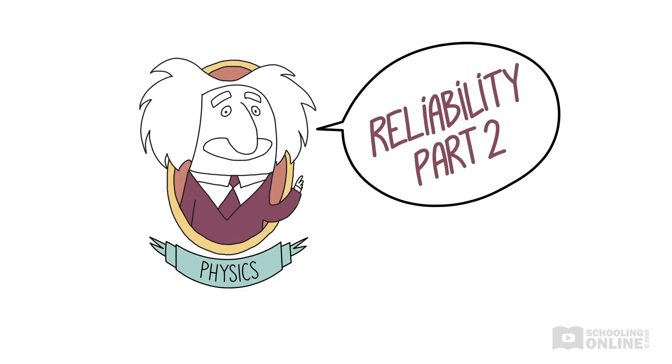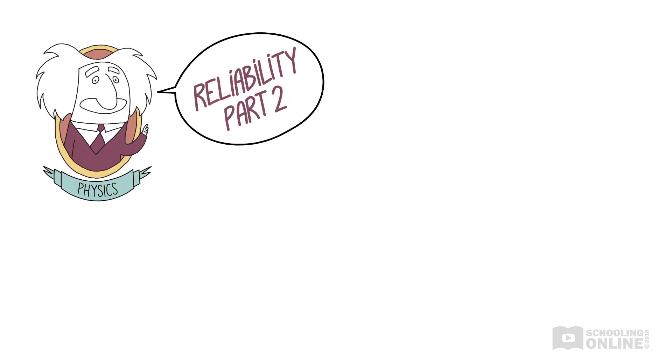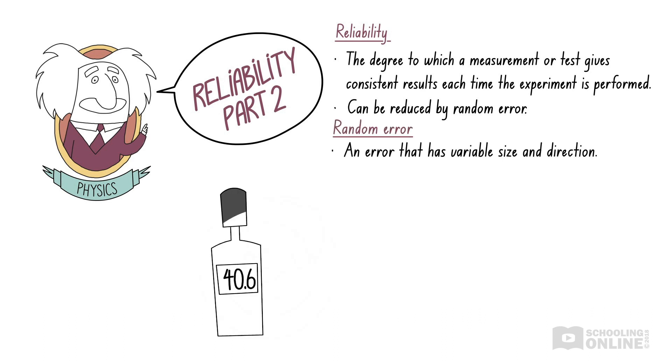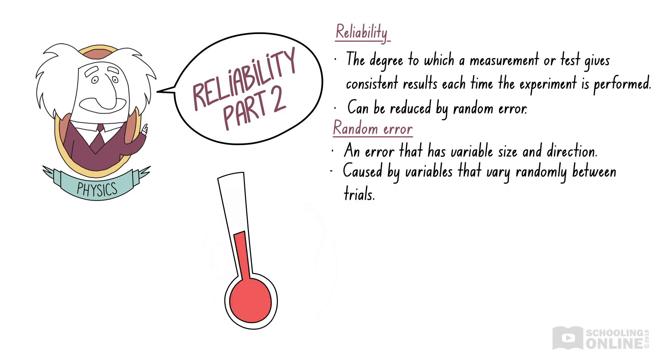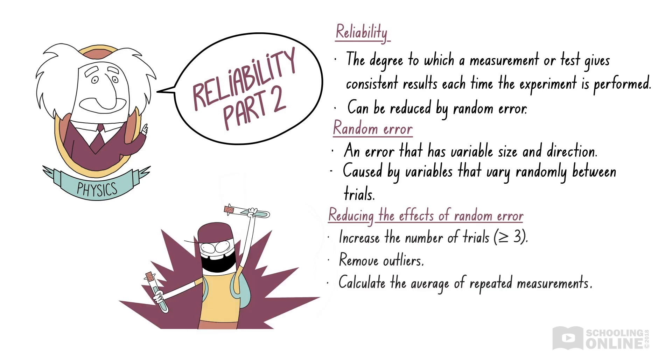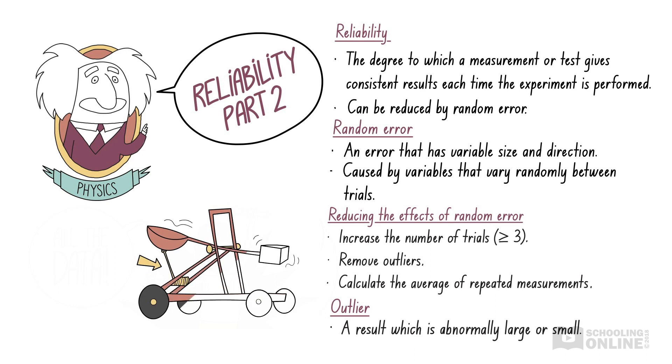Let's revise what we've discussed in this video. Reliability is the degree to which a measurement or test gives consistent results each time the experiment is performed. The reliability of an experimental procedure can be reduced by random errors. A random error is an error that has variable size and direction. Random errors are caused by variables that vary randomly between trials, such as temperature. We can reduce the effects of random error by increasing the number of trials we perform, removing outliers from our results, and calculating the average of repeated measurements. An outlier is a result which is abnormally large or small.